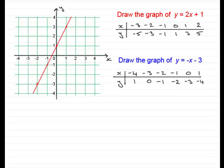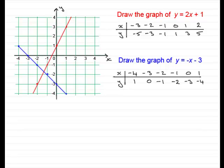So let's mark on the coordinates. Minus 4, 1 — that's that point there. Minus 3, 0. Minus 2, minus 1 — that one. Minus 1, minus 2 — that one. And 0, minus 3. You can see we're getting a straight line. Then 1, minus 4 — that point there. So if we join these points up, we've got that line there.